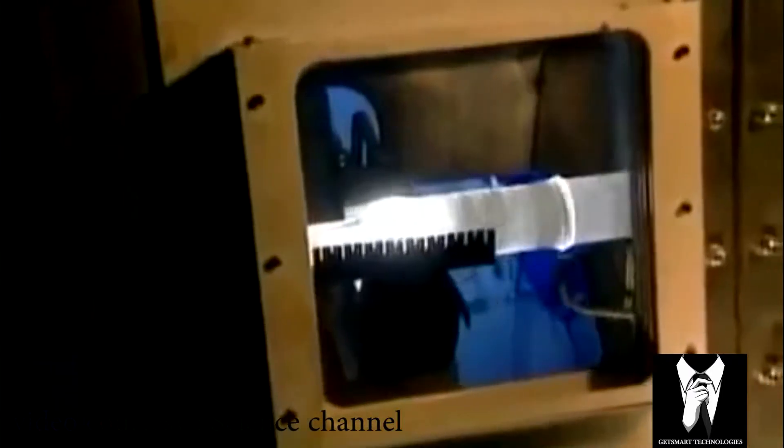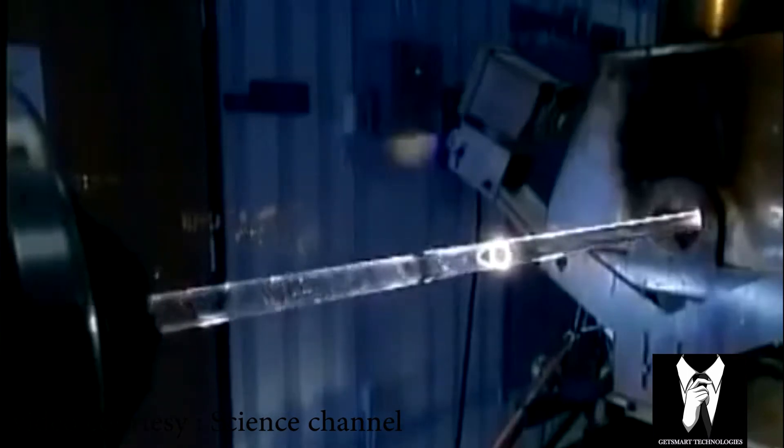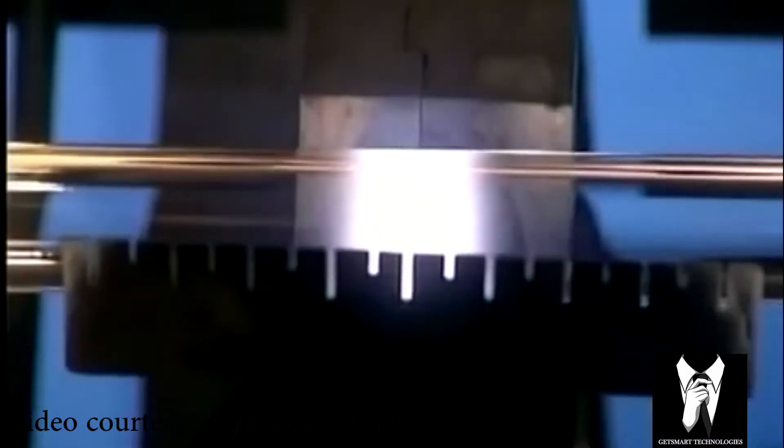As the gases heat, they undergo a chemical reaction that leaves a white soot on the inside of the glass. The heat fuses the soot, forming what will eventually become the core of the optical fiber. The glass tube itself will form the fiber's cover.